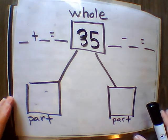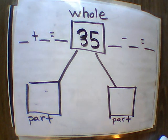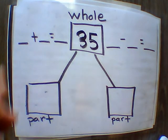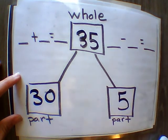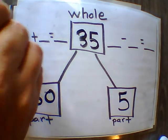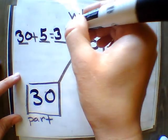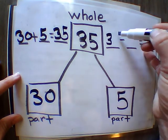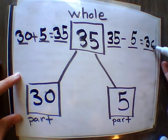Now we're on to whole, part, part. Remember, breaking into tens and ones. So do that now. Go! So we're going to break 35 into 30 plus 5. And it is 30 plus 5 equals 35. 35 minus 5 equals 30.